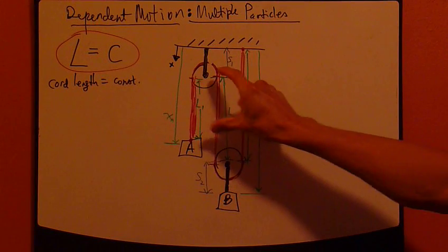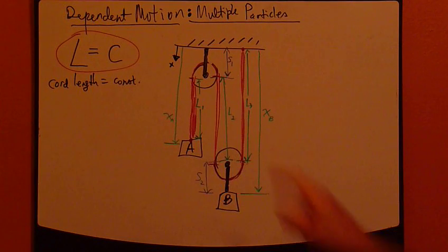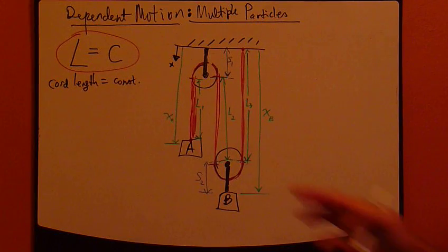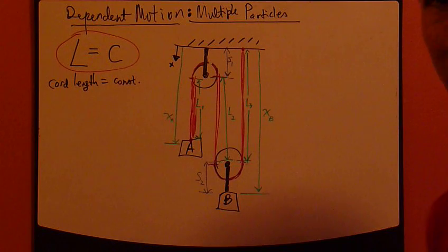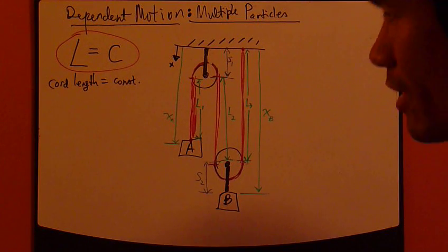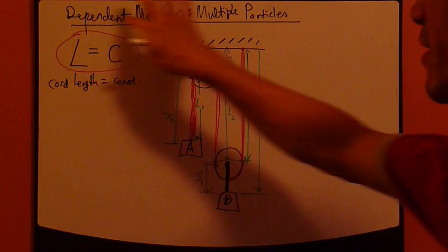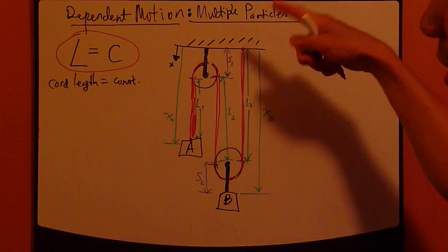So, basically, these three visible red chords. That's L1, L2, and L3. Let's start with this equation right here. Now, chord length equals constant. That's the fact. That's a very important starting point in analyzing this kind of motion.